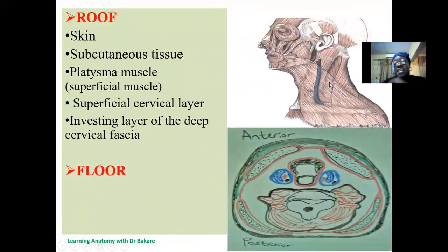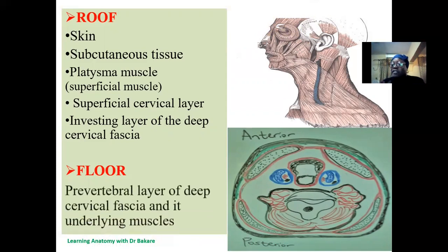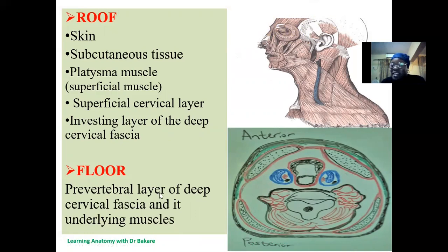The floor of the posterior triangle is formed by the prevertebral layer of the deep cervical fascia and its underlying muscles. This will be further explained to show how each of these structures form the roof and floor of the posterior triangle.